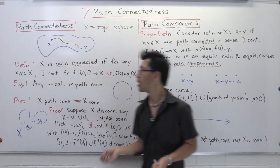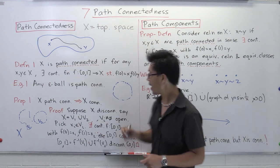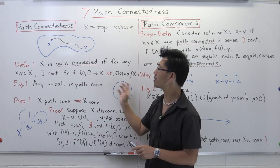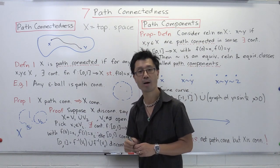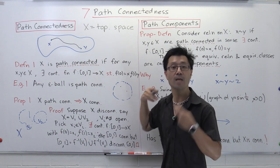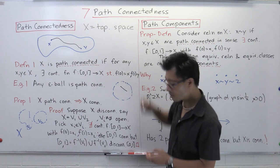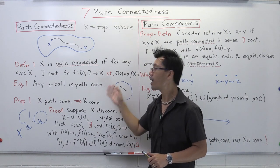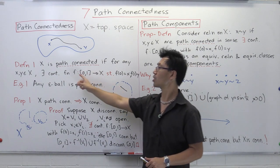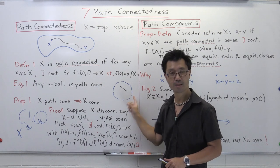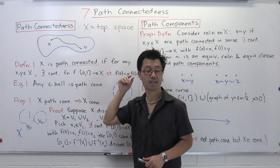Let's look at a simple example. Suppose you're looking at epsilon balls inside Euclidean space. If you pick any two points, to show that this is path connected, we have to show that there is a path from one to the other. That's easy because the epsilon ball is convex. If you draw the straight line joining them, it lies inside the epsilon ball. Hence you can construct a continuous affine linear function such that f(0) is at one point and f(1) is at the other, showing any epsilon ball in Euclidean space is path connected.